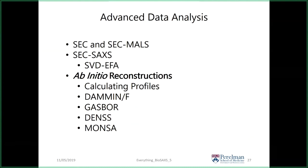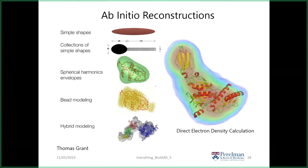Now, with these scattering profiles in hand, you have the opportunity to run various algorithms that have different strengths, weaknesses, and applications. Up to this point you've heard about model-independent analyses: Guinier plot, Kratky plot, pair distance distribution function. Those are analyses independent of any structural model where you can learn quantitative information about your macromolecule in solution. Now we're delving into model-dependent analyses — reconciling the SAXS scattering data with known atomic structures and models.